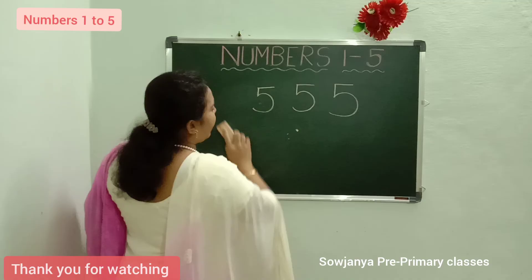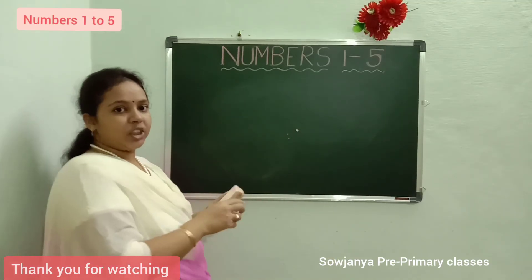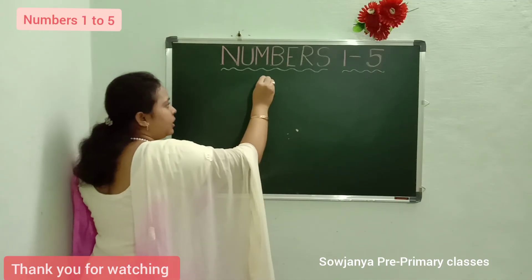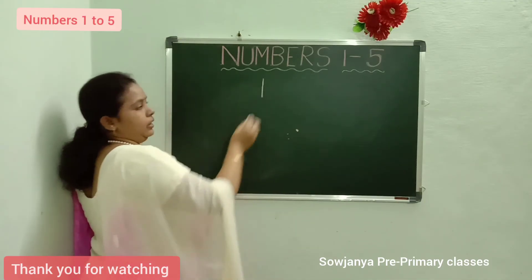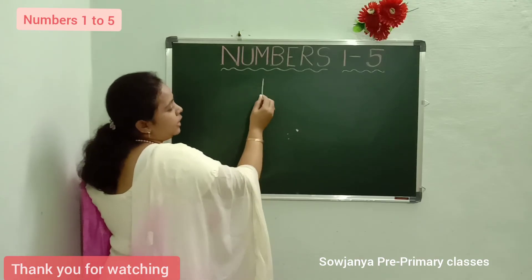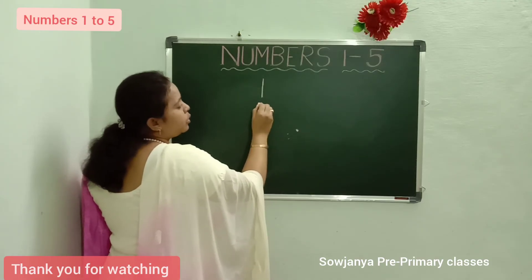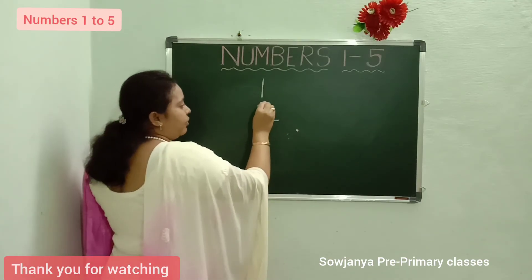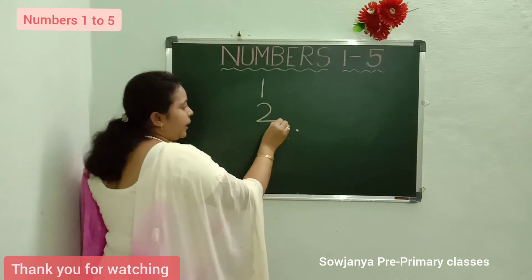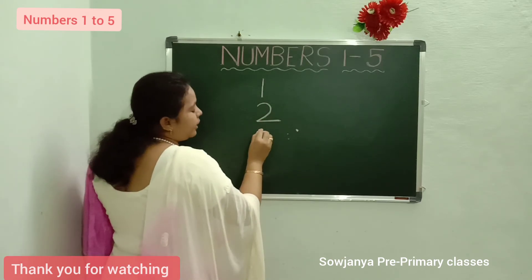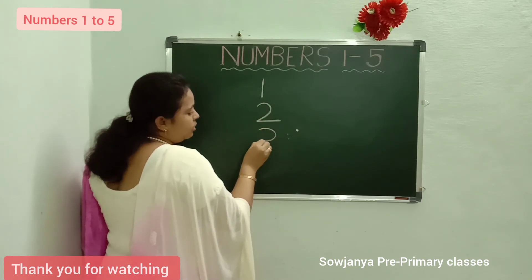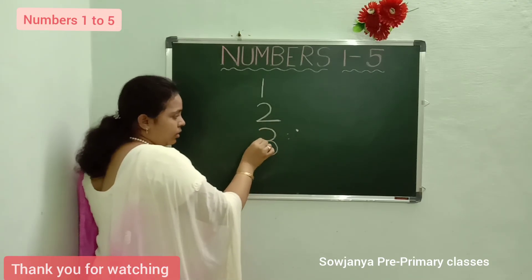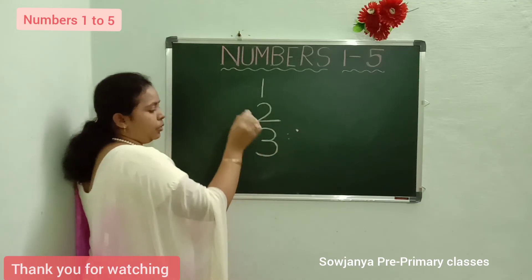Again, I will tell you how to write from 1 to 5. Ok children? See 1. What is this number? 1. 1 should be a standing line. 2. How to write 2? Left curve, sleeping line. 2. Left curve, sleeping line. 2. How to write 3? Left curve, another left curve. 3. Left curve, another left curve. 3.